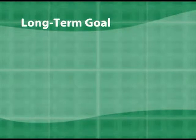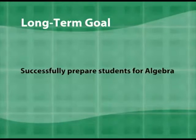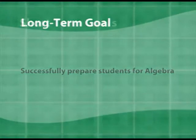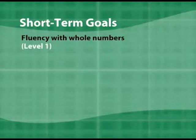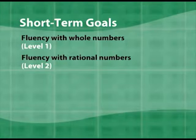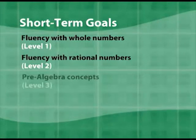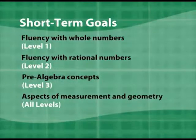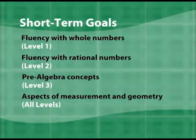The long-term goal of TransMath is to successfully prepare students for algebra. With that in mind, some short-term goals include students gaining fluency with whole numbers found in Level 1, fluency with rational numbers found in Level 2, pre-algebra concepts found in Level 3, and certain aspects of measurement and geometry found throughout all three levels of the program.